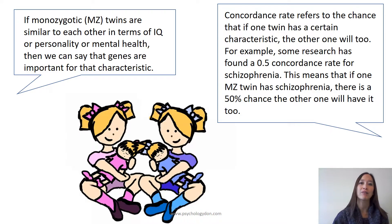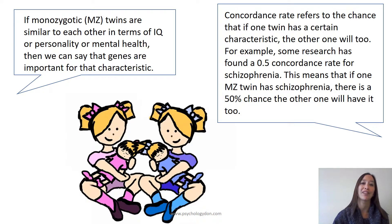For example, some research has found a 0.5 concordance rate for schizophrenia. This means that if one monozygotic twin has schizophrenia, there's a 50% chance the other one will have it too.